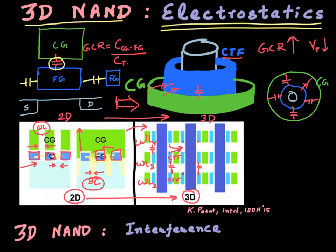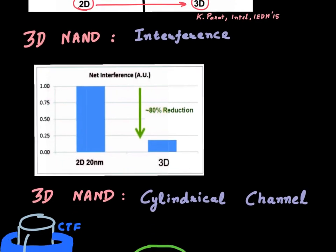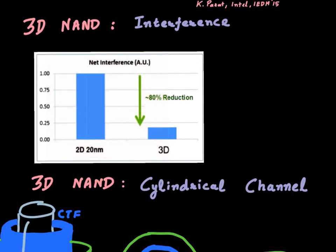Because of this gate-all-around architecture, you get much better electrostatics in a 3D NAND cell. This is reflected in a plot from one of the papers from the Intel Micron team, showing that as you move from a 2D NAND flash based on a 20 nanometer design to a 3D NAND flash, the net interference — a measure of electrostatics — reduces substantially.